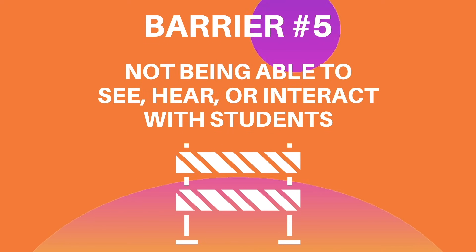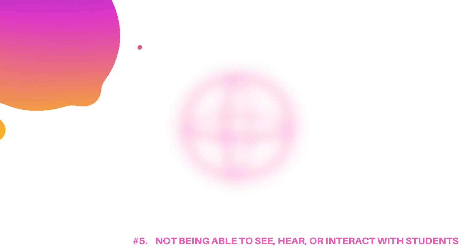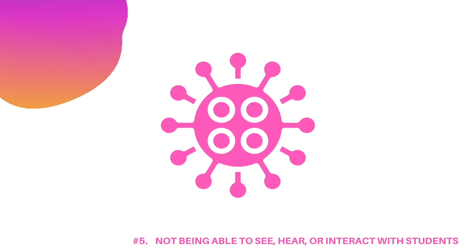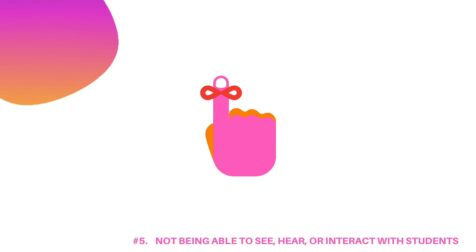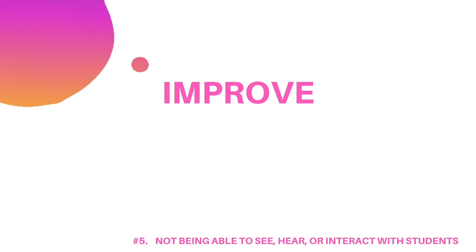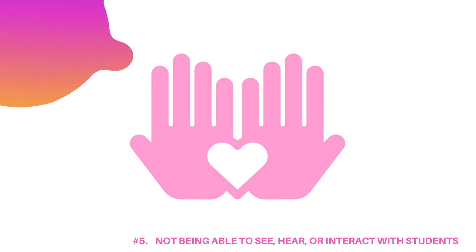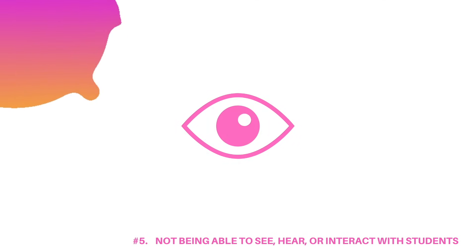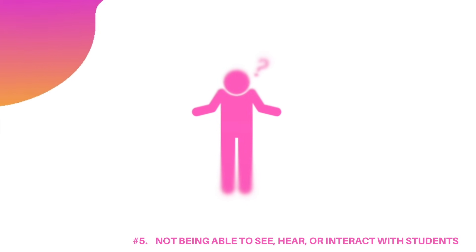Barrier number five: not being able to see, hear, and/or interact with students due to circumstances beyond our control. When circumstances beyond our control — such as the COVID-19 pandemic — create barriers to connecting with any of our students, we need to remember that the purpose of assessment is to improve learning and prioritize their well-being above all else. Having challenges seeing them, hearing their voices, using body language and other nonverbal forms of communication are just some examples.